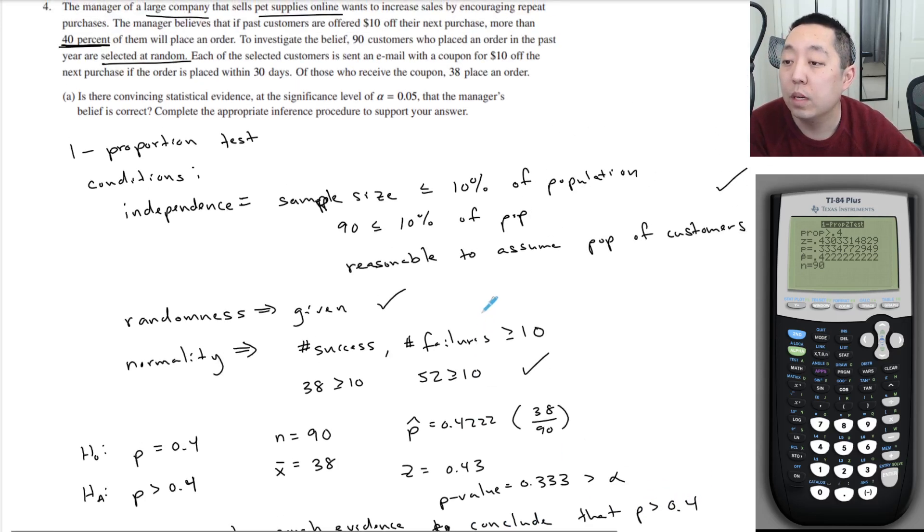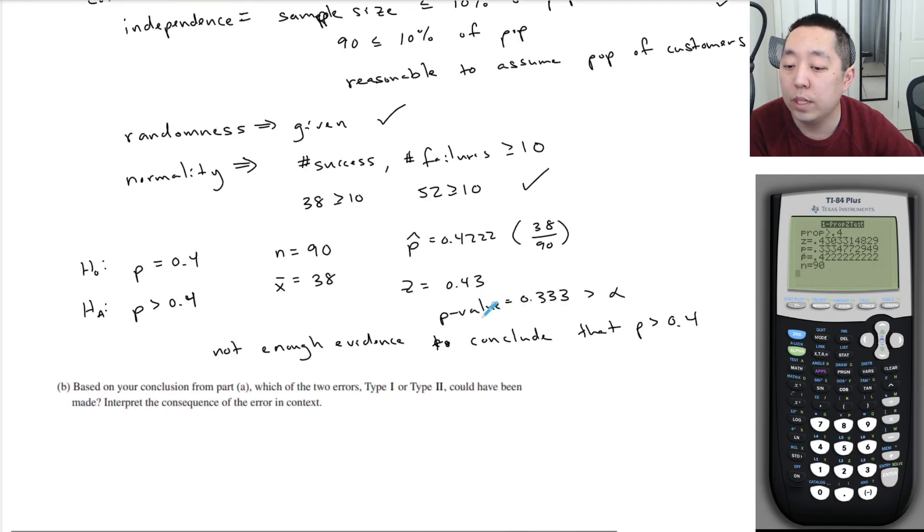to conclude that p is greater than 0.4. Okay. Anything else I want to say more than 40%? Yeah, I think that's not enough evidence to conclude that. That's what you would say. You failed. In other words, we say we failed to reject H0.